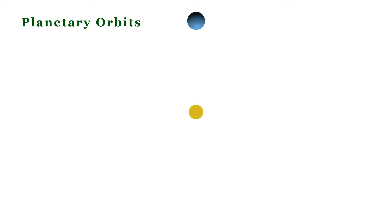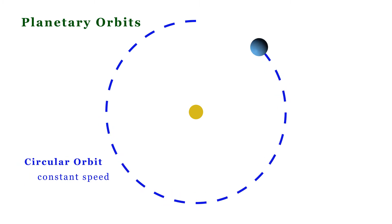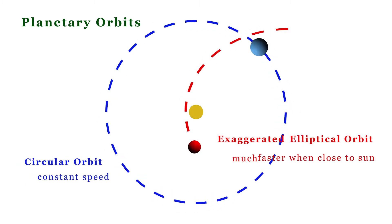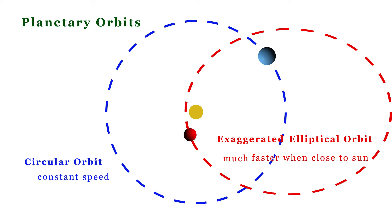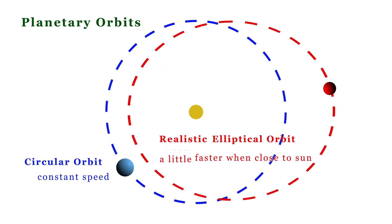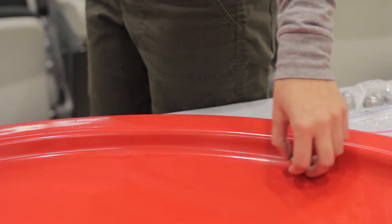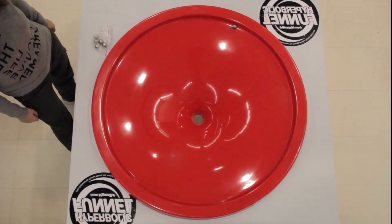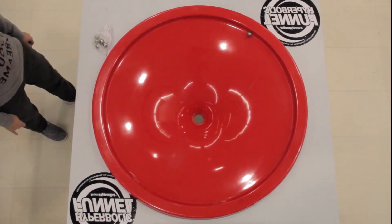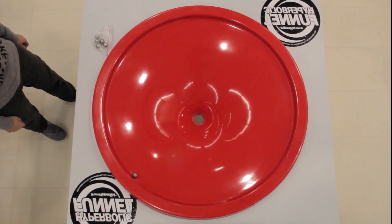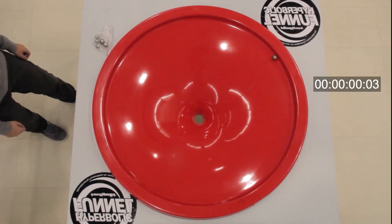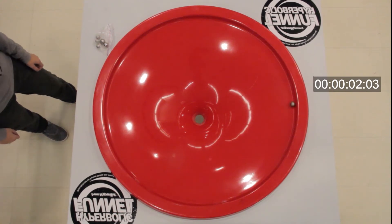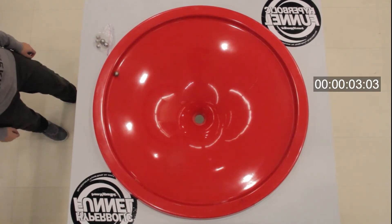In this video, we will work exclusively with circular orbits, which have constant speed. This is useful, as all of the planets in our solar system have elliptical orbits that are close to being circular. Let's start by placing a ball in a circular orbit. We can crudely determine the period of the orbit using the timecode on the video, and find it to be pretty close to two seconds.